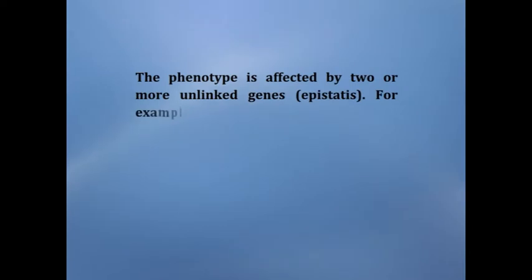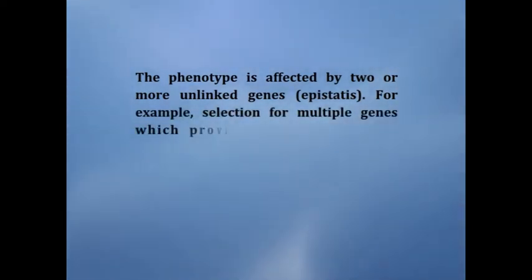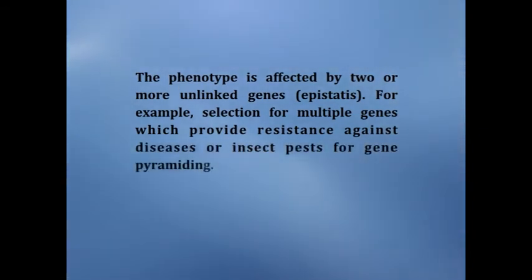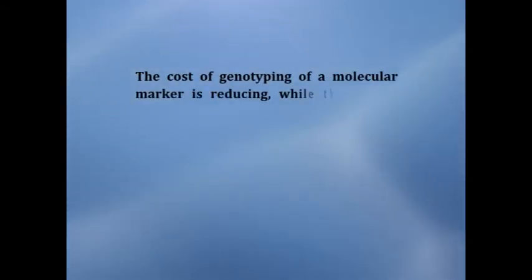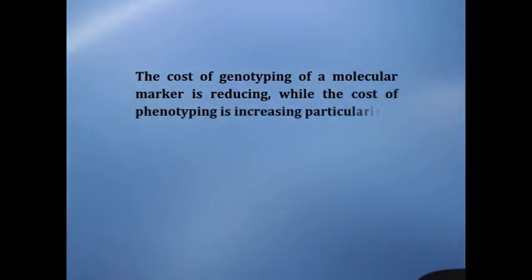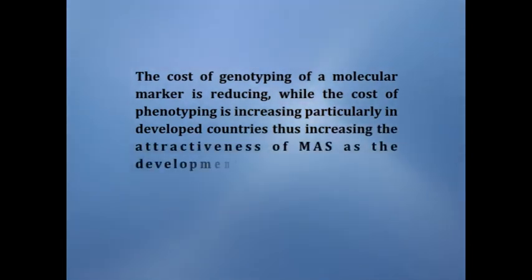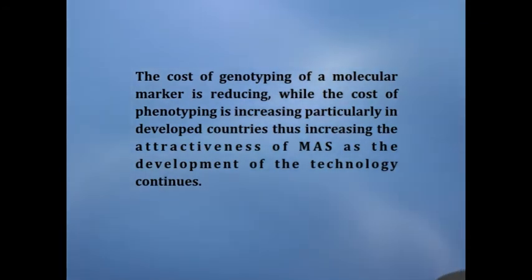Moreover, problems in the recognition of environmentally unstable genes can be eluded. The next situation is when the phenotype is affected by two or more unlinked genes — for example, selection for multiple genes which provide resistance against diseases or insect pests for gene pyramiding. The cost of genotyping a molecular marker is reducing while the cost of phenotyping is increasing, particularly in developed countries, thus increasing the attractiveness of marker-assisted selection.